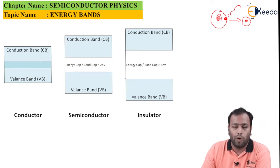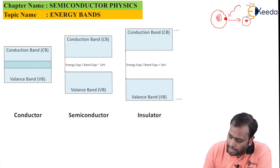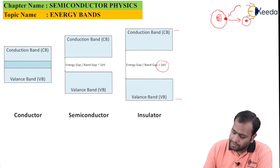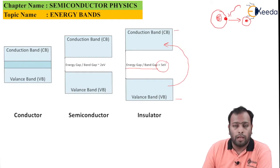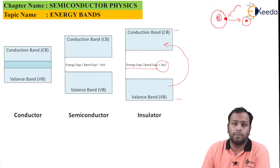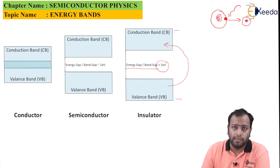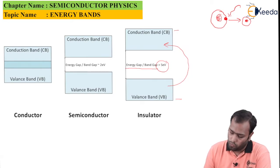Now for insulators, which are bad conductors of electricity: in the diagram you can see there is a gap of more than five electron volts between the valence band and conduction band. This is called the energy gap or band gap. To move an electron from the valence band to the conduction band, you would need around five electron volts per electron — and providing that much energy would essentially turn the material into a conductor. Hence, insulators have a very high band gap, making electrical conduction very difficult.